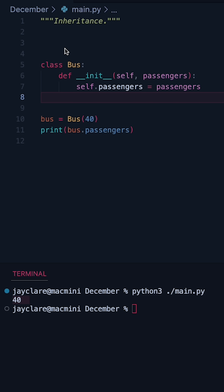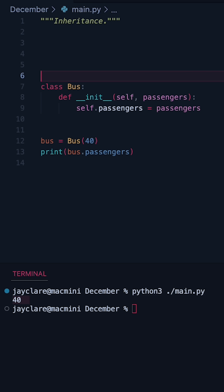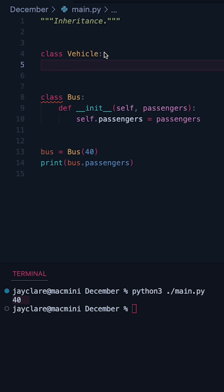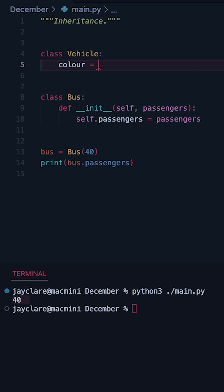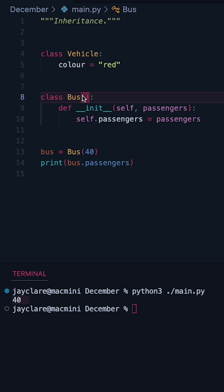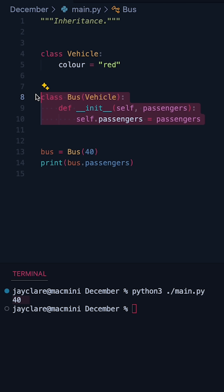Now when we inherit, we're taking all of the methods and attributes from whatever class we're inheriting from. So let's make Bus inherit from a class. We have a Vehicle class, and let's just say color is equal to red. Then we change our Bus class to add parentheses and pass in Vehicle. So now Bus is inheriting from Vehicle.